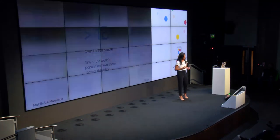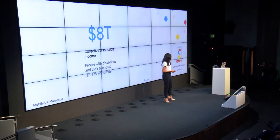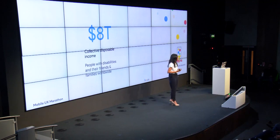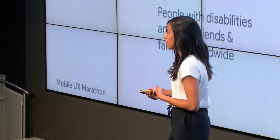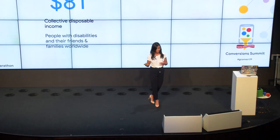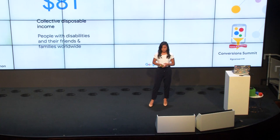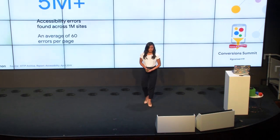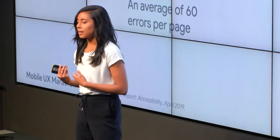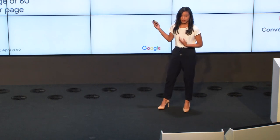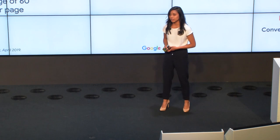As much as I don't like to talk about money, if you have to do this with stakeholders or decision makers, you should understand that $8 trillion US dollars is the amount of collective disposable income for people with disabilities and their friends and family worldwide. A study by Gartner included friends and families of people with disabilities. And from a study of one million websites by the HTTP archive, we found an average of 60 errors per page, with the most common ones being low contrast — which is such an easy fix.